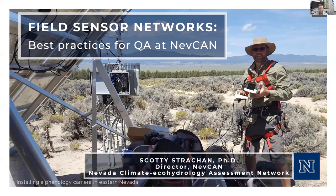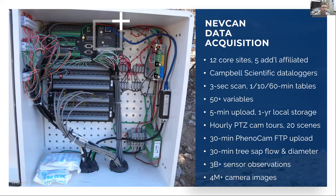I'm going to talk a little bit about quality assurance at NIVCAN — the Nevada Climate Eco-Hydrology Assessment Network. I'll hopefully get through it pretty quickly, talking a little bit about the network and how we are keeping long-term observations running, hopefully in a uniform manner. A quick overview of the network: we have 12 core sites that involve 10-meter towers with a number of sensors.